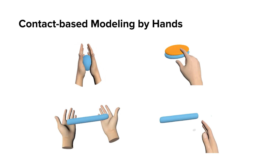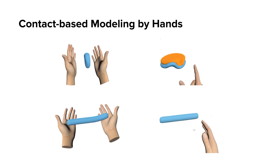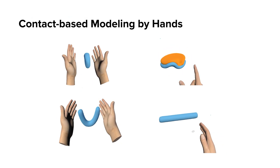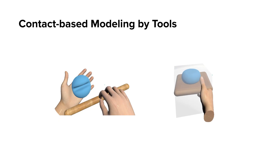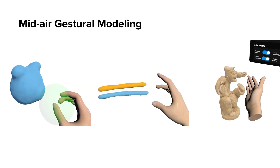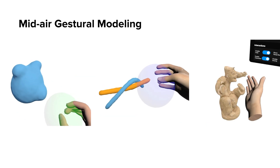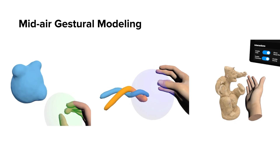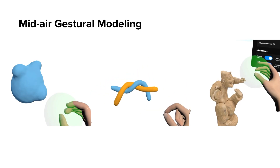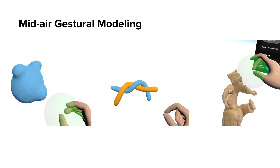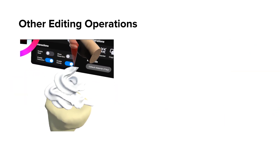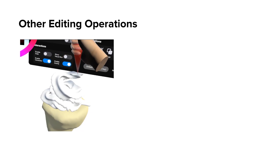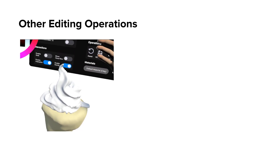Here we showcase various contact-based modeling cases: pinching and reshaping with fingers, bending a cylinder, and cutting it. We provide auxiliary modeling tools such as a planar slab, a rod, and scissors to support diverse and controlled deformations. We provide a mid-air pinch gesture, enabling users to perform operations such as stretching or twisting materials by applying a force field to selected MPM particles. To add new materials to an object, users can utilize a sourcing tool that extrudes geometry — demonstrated here by extruding ice cream onto a cone.